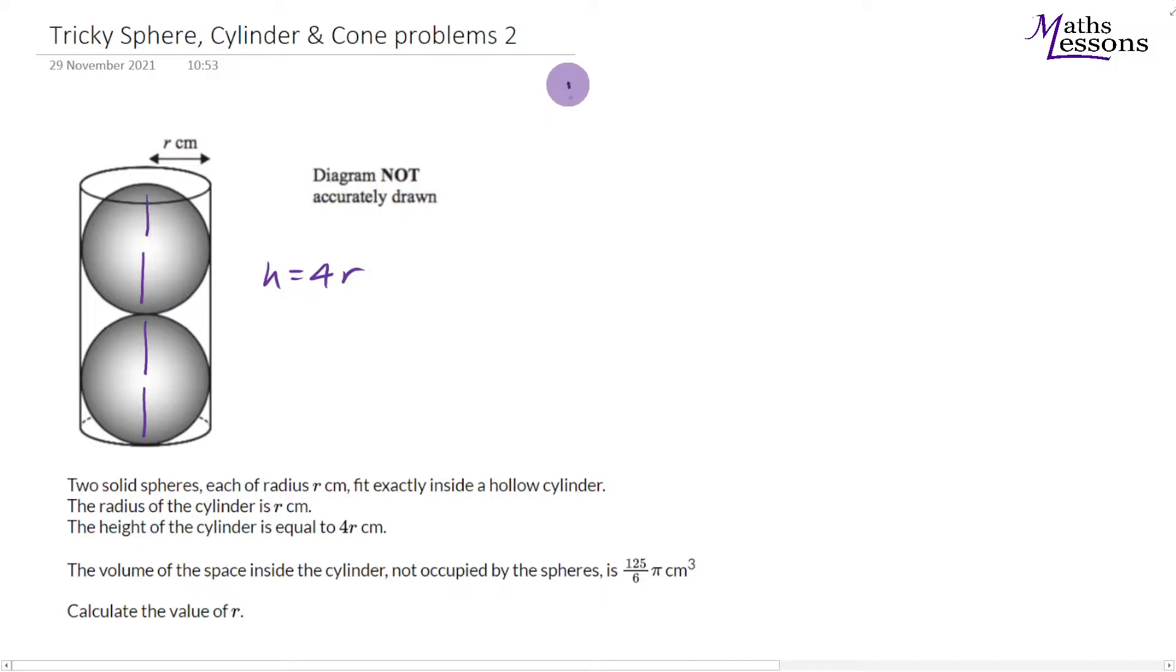Now we know the volume of the sphere, so volume of the sphere is equal to 4/3 times pi times r cubed. And we know we've got two of those. So the volume of both spheres in this case will be 8/3, because we times the top by 2, pi r cubed.